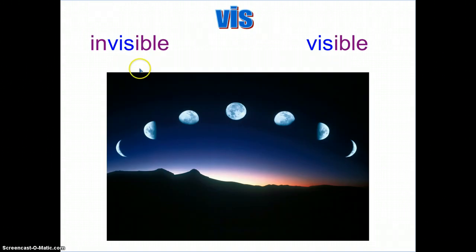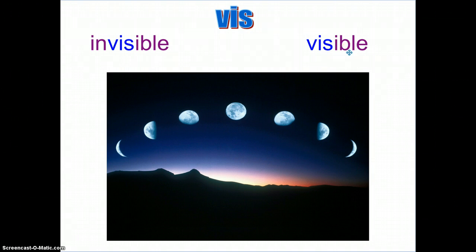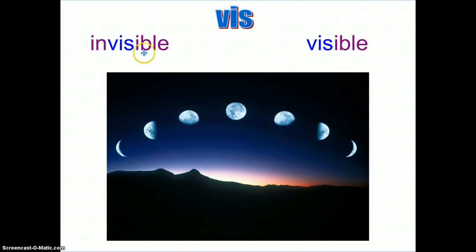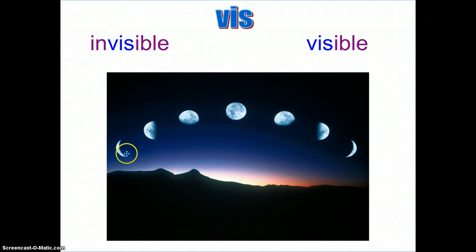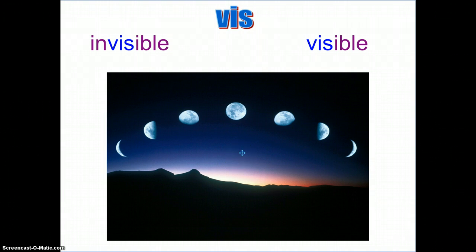Our last examples of vis and vid are invisible and visible. The suffix -ible means able, and vis means to see. So if something is visible, you can see it. The opposite is invisible — in- is a prefix which means not, -ible means able, and vis means to see, so this word means not able to see it. Our example is the phases of the moon. Certain times during the month we can see the moon — it is visible. At times, we cannot see the moon at all because it's a new moon, so it is invisible at that time.